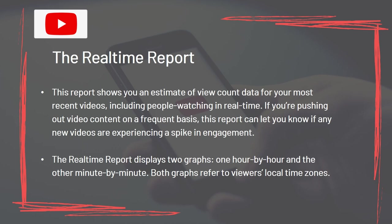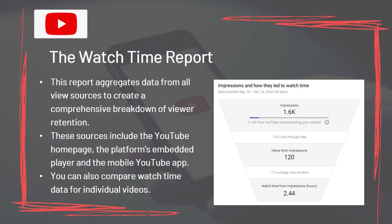The Real Time Report displays two graphs — one hour by hour and one minute by minute, both referring to viewers' local time zones. The Watch Time Report aggregates data from all view sources to create a comprehensive breakdown of viewer retention, including the YouTube homepage, the platform's embedded player, and the mobile YouTube app. You can also compare watch time data for individual videos.